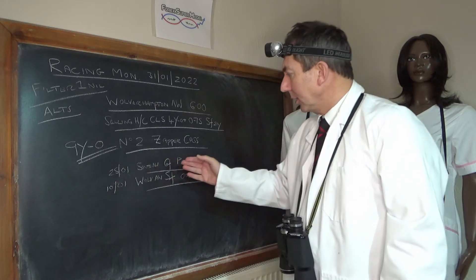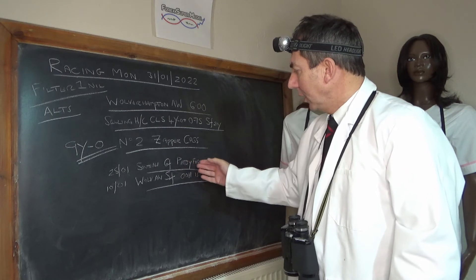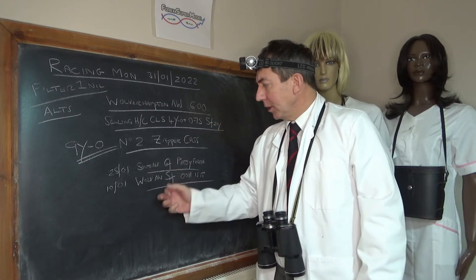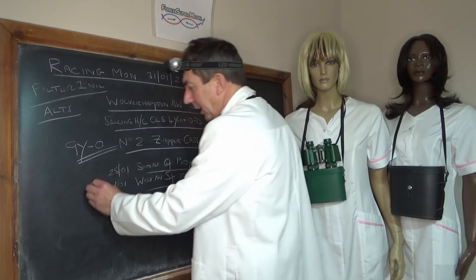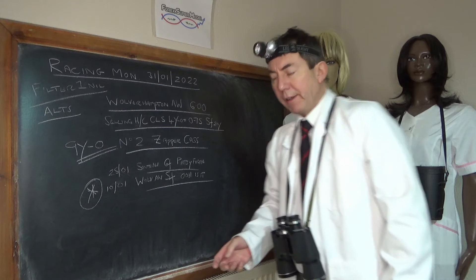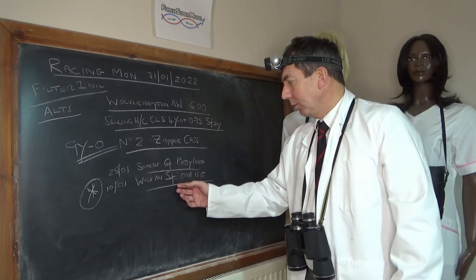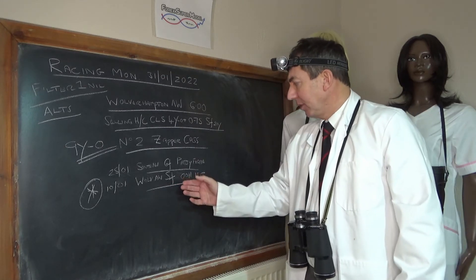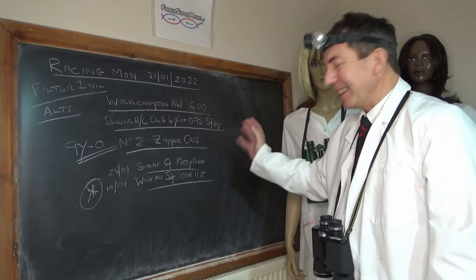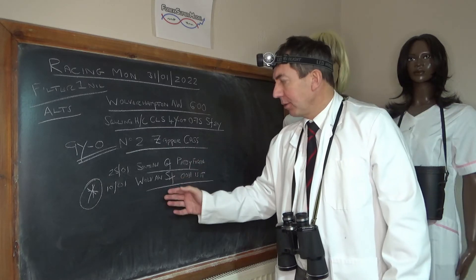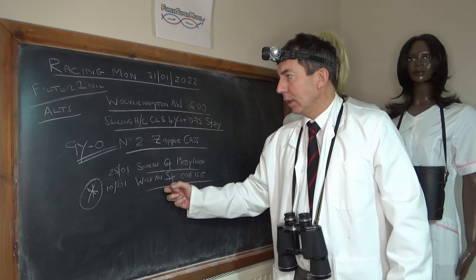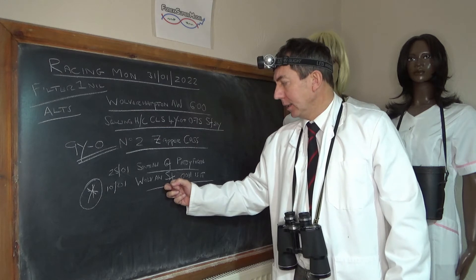We've looked at this horse in depth. Last two runs, previously ran at Southwell on six furlongs where the winner was Patsy Fagan, decent enough race. But the key race here is the 10th of January. It ran at Wolverhampton on the all-weather, five furlongs, won by Oh Is It That. That's a very good race, miles ahead of anything in today's race.